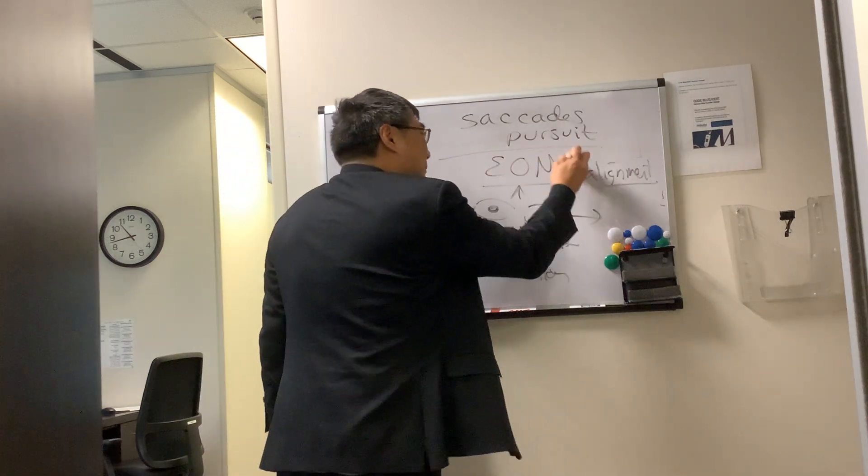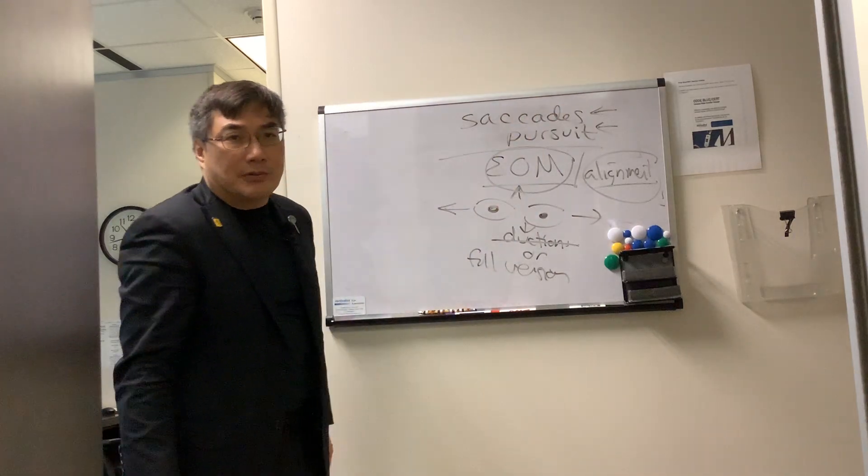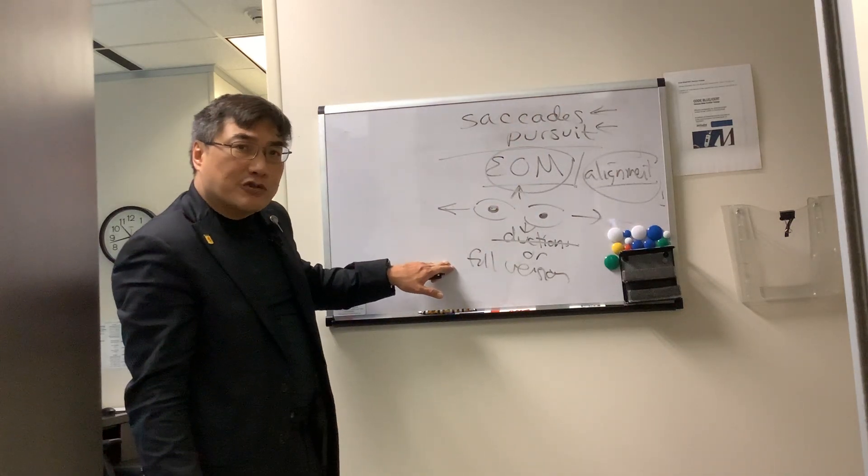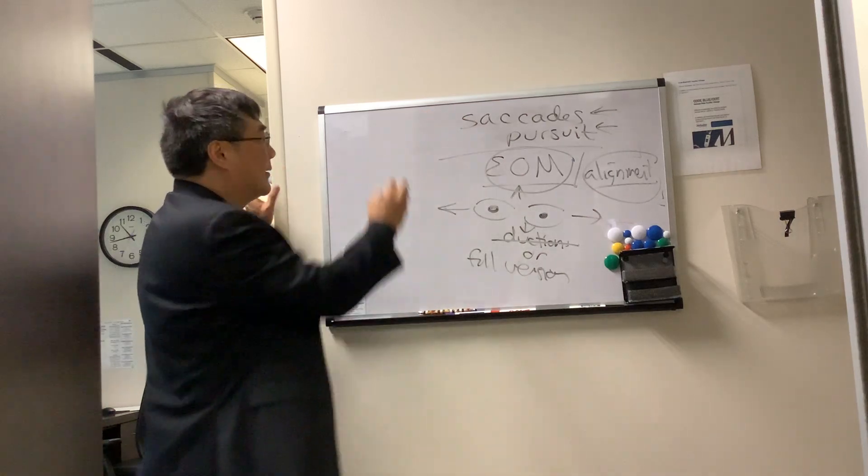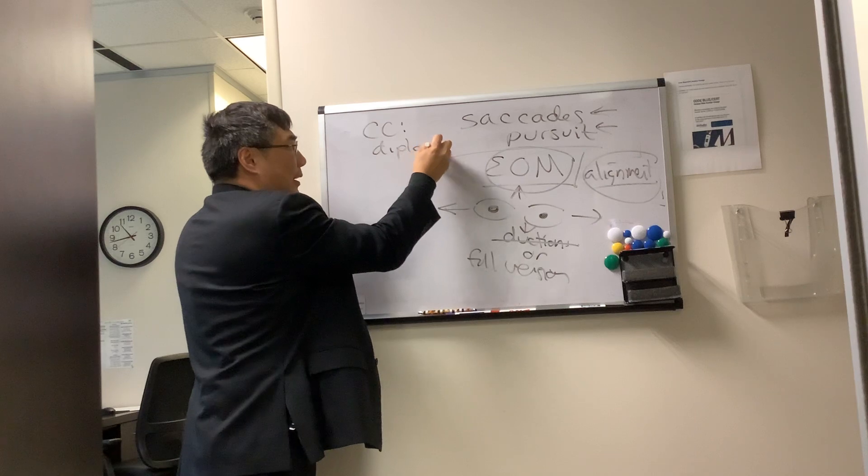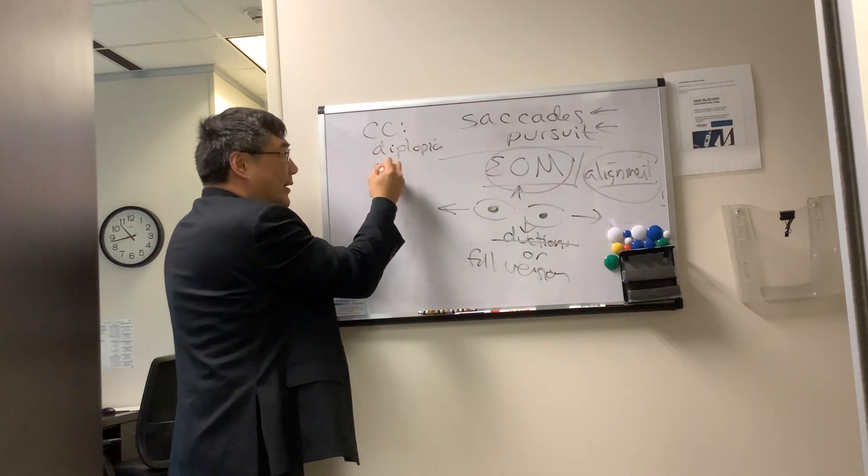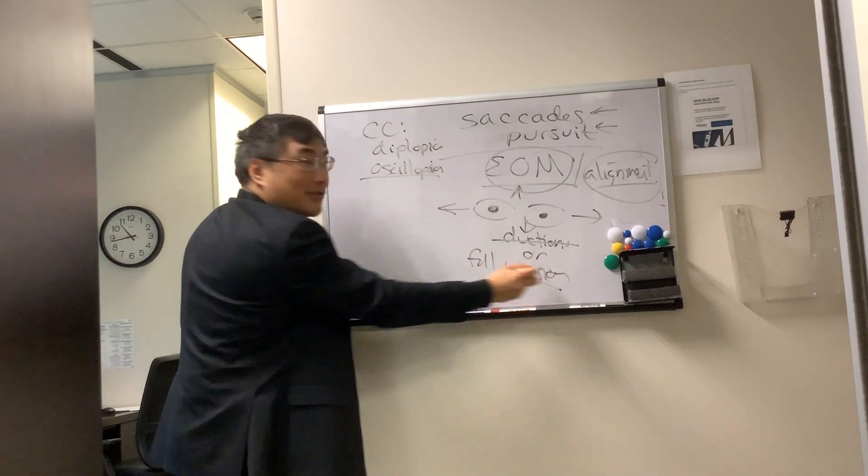However, what if their complaint is something related to movement or alignment? Now you do have to test the saccade and the pursuit because just testing the version alone is not adequate to get to that person's complaint. So if the chief complaint is I see double, diplopia, or things are jumping, oscillopsia, then you have to do more than just the versions.